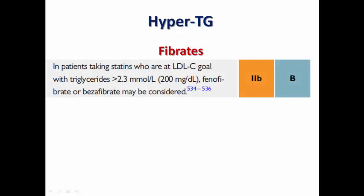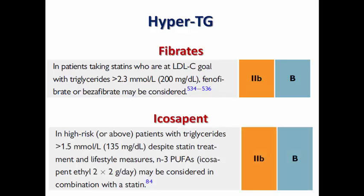If the patient cannot reach a target triglyceride level below 200 mg/dL, phenofibrate or bezafibrate can be added — this is class 2B. Icosapent ethyl (a purified N-3 polyunsaturated fatty acid) was added in the 2019 guidelines: in high-risk patients who cannot reach their goal despite statins, it can be added at a dose of 2g twice per day, also class 2B.